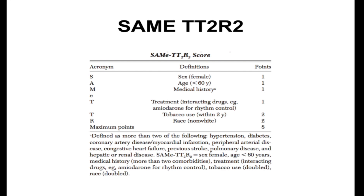The options a clinician can choose for higher-scoring patients are: improve education regarding anticoagulation control through a structured education program; select a DOAC, although they are expensive and not always covered by insurance; or weigh the risk versus benefits to see if the patient truly needs to be on an anticoagulant at all.